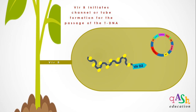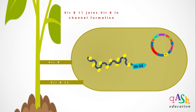Vir proteins such as VirB then begin the initiation and synthesis of a channel or tube for the passage of the extracted T-DNA copy. VirB11, another vir protein, joins VirB in the formation of this channel. This channel or tube created for the transfer of the single-stranded T-DNA copy is similar to the conjugal tube observed in conjugation events in other bacteria.